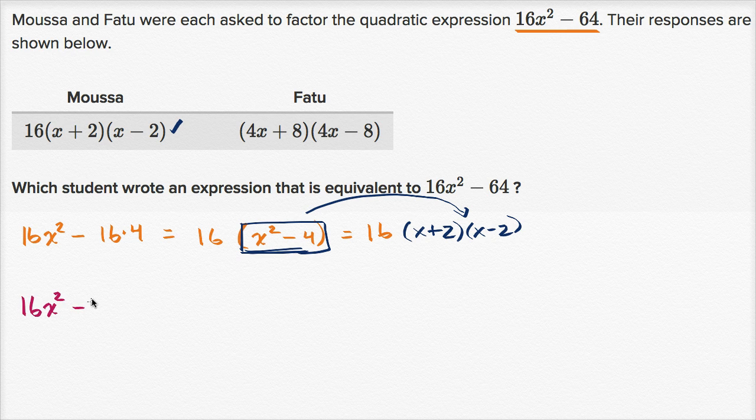16x squared minus 64, that's the same thing as 16x squared is four x, the whole thing squared, and then minus eight squared.